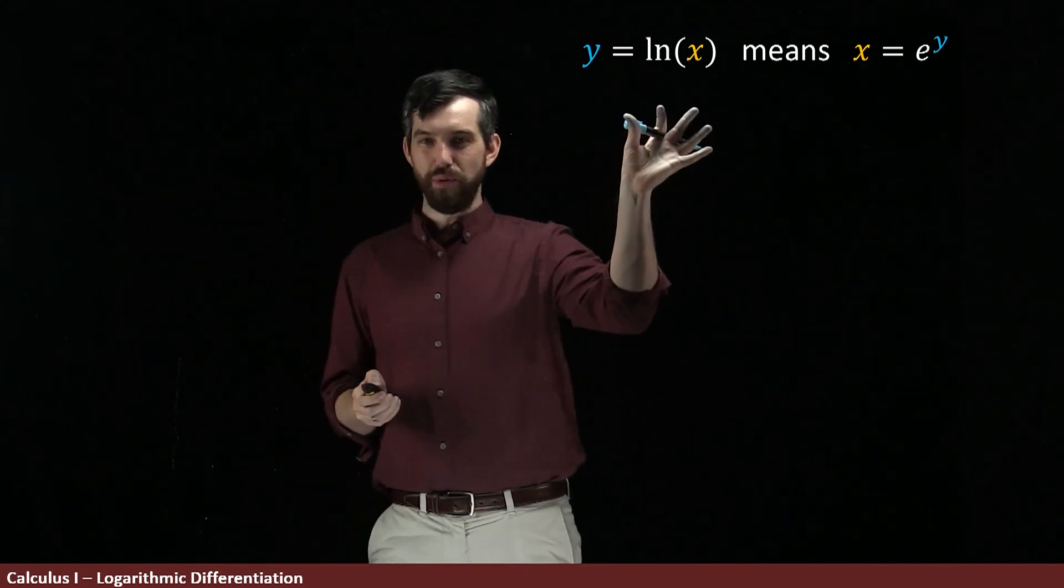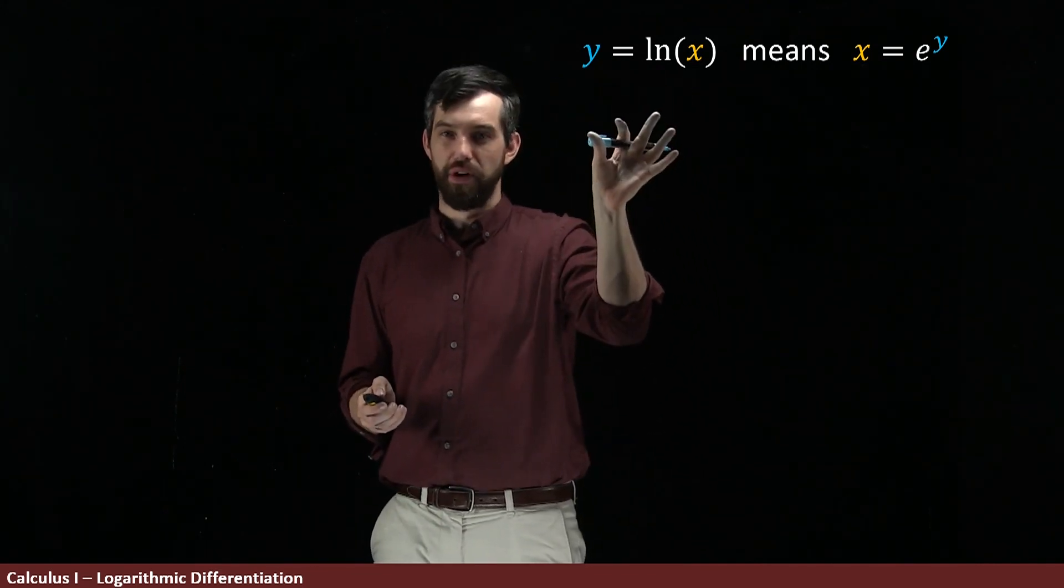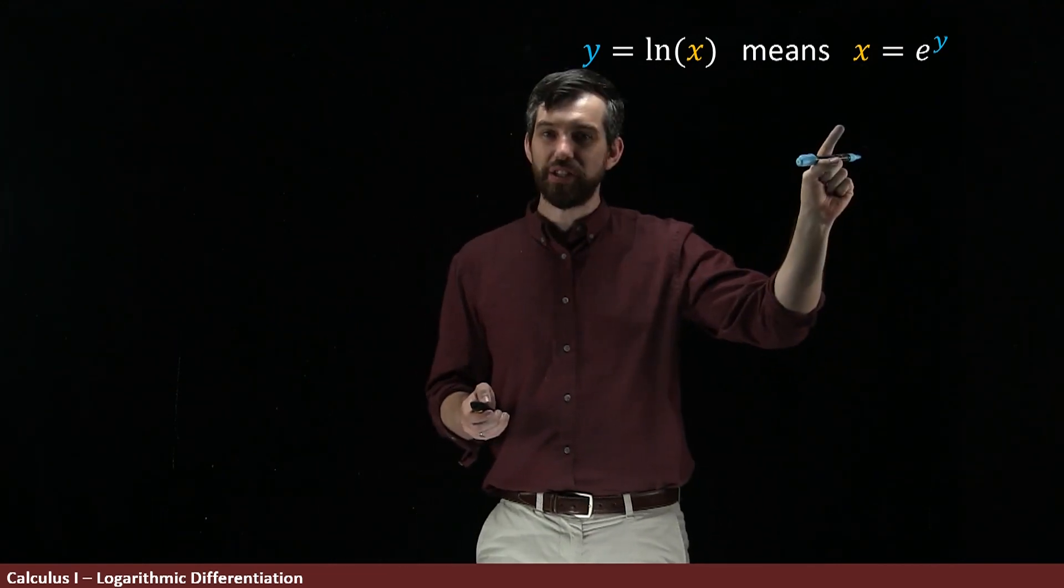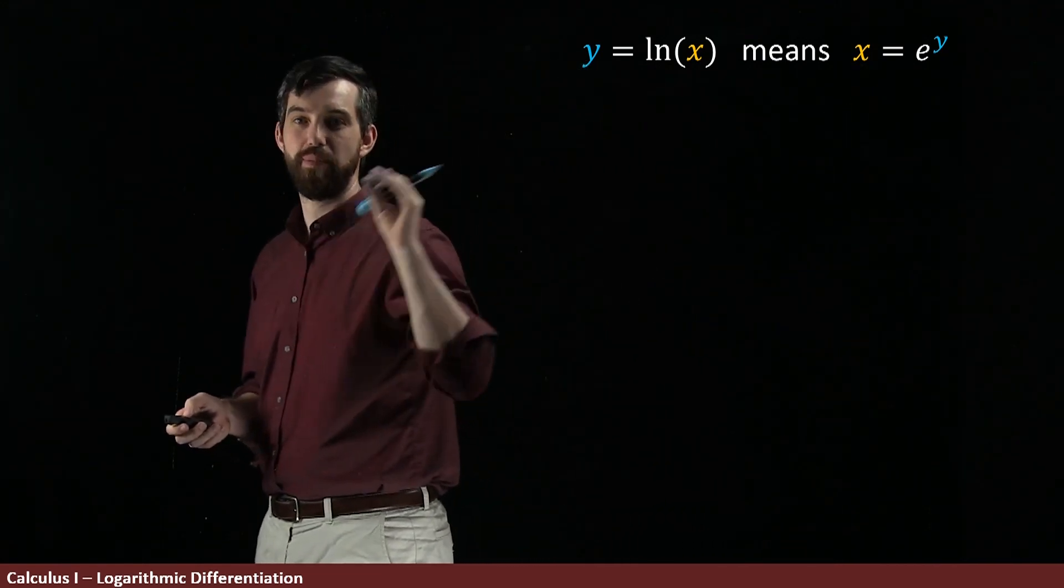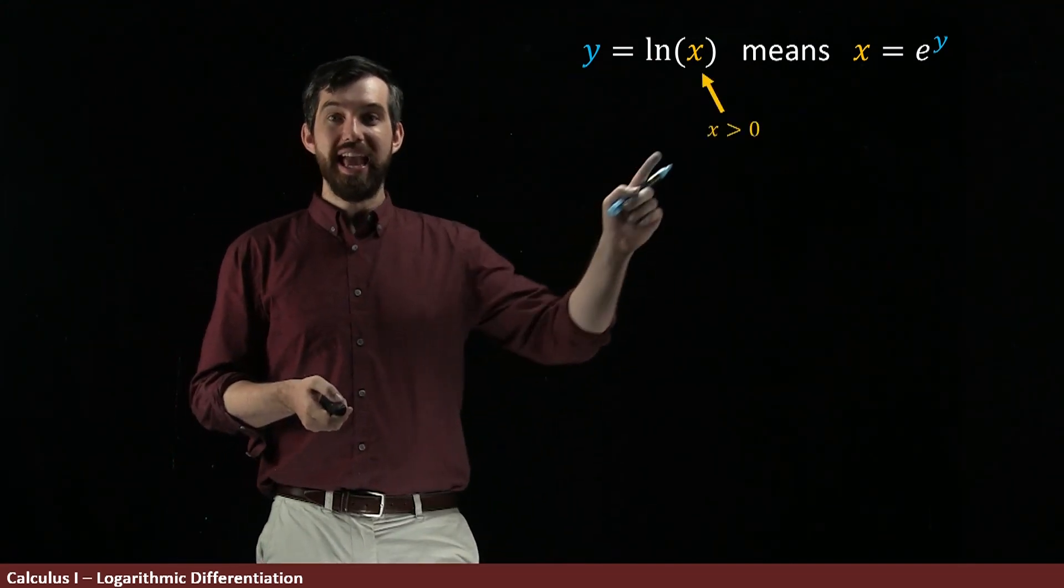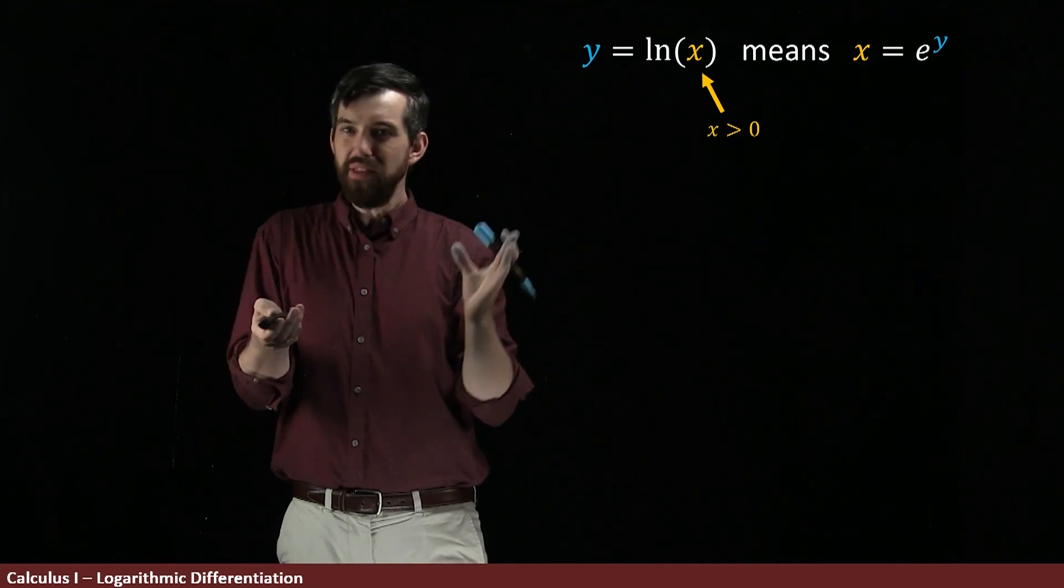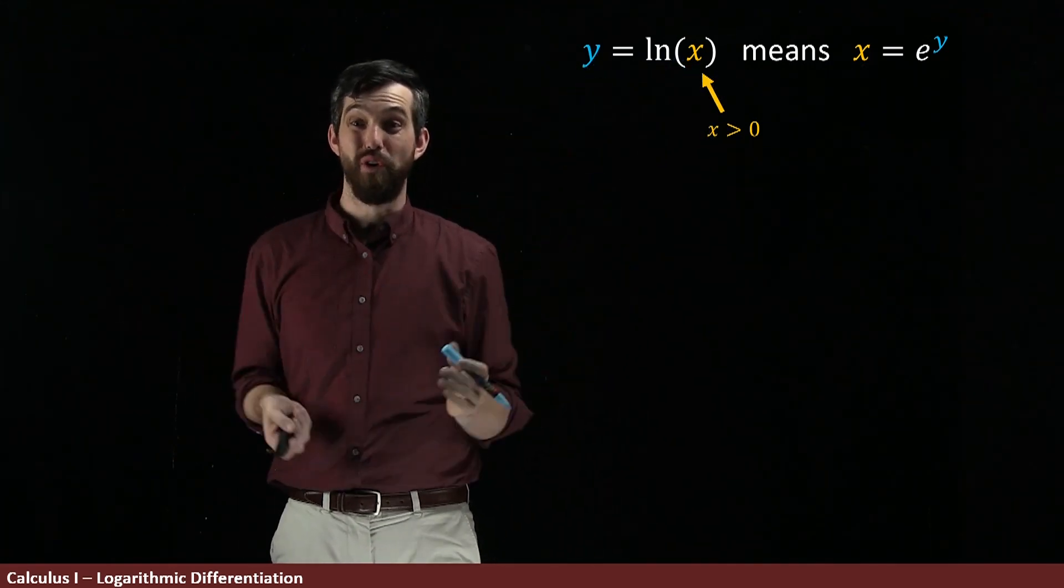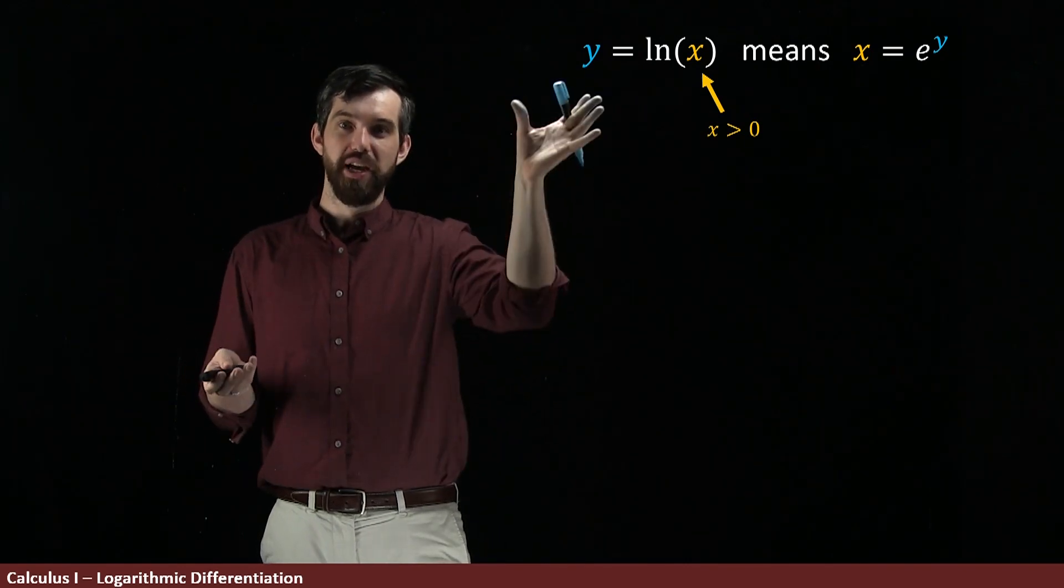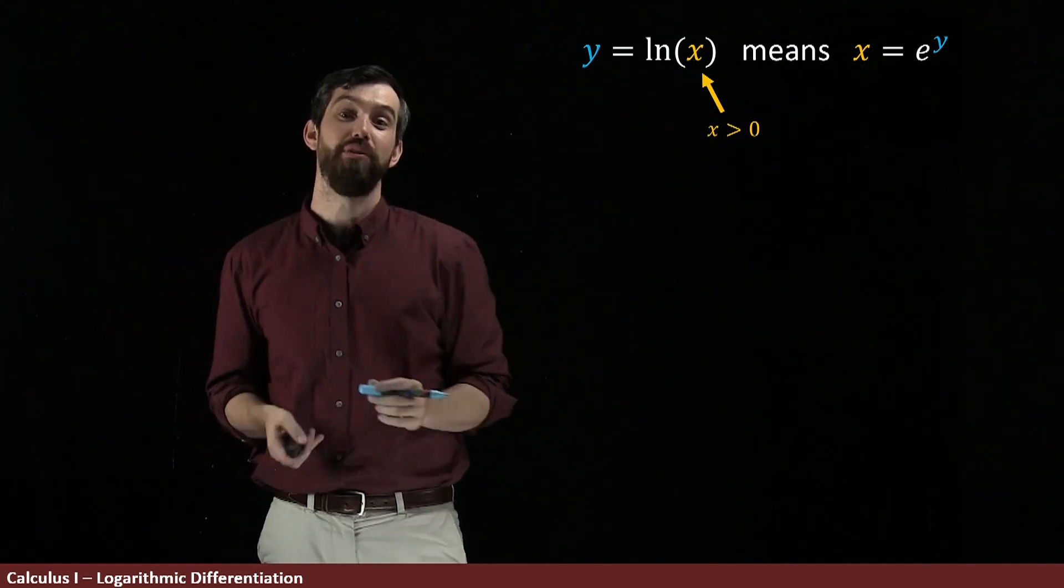So we have y equals the natural logarithm of x, and what this meant, because it was an inverse, was that x was equal to the exponential e to the power of y. And again, I'll point out that the x here is only allowed to be positive. Now, taking the derivative of both sides of the original form is unhelpful to us. It just says the derivative of y with respect to x is the derivative of the natural logarithm, but that's what we're trying to figure out.